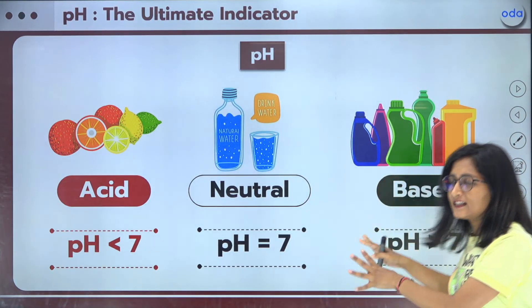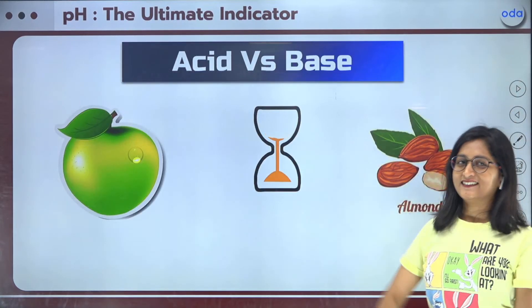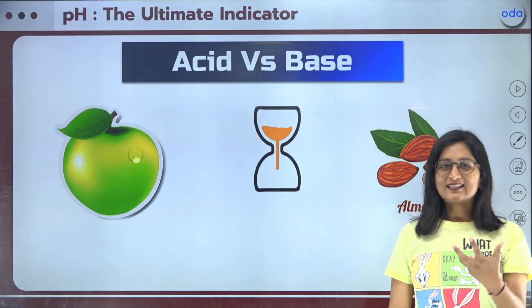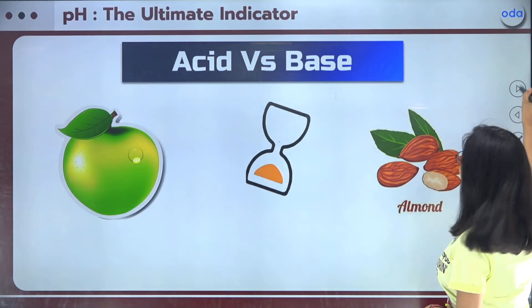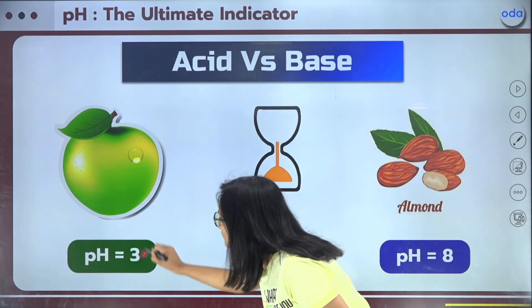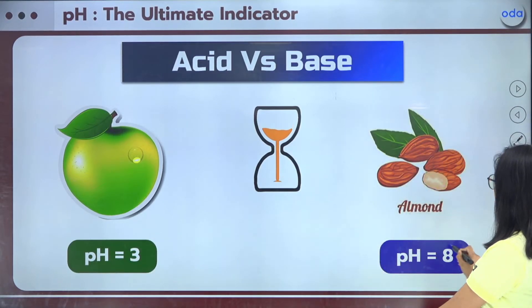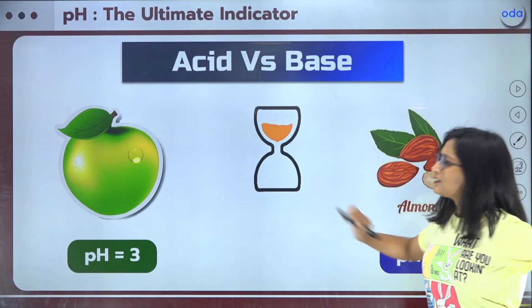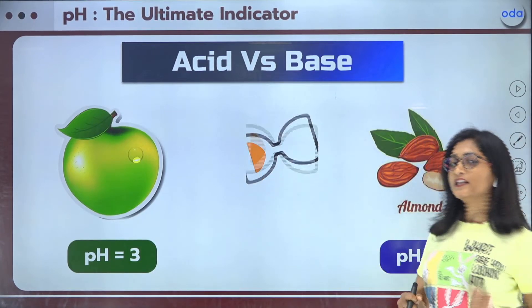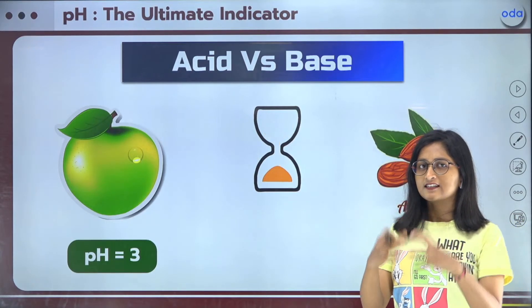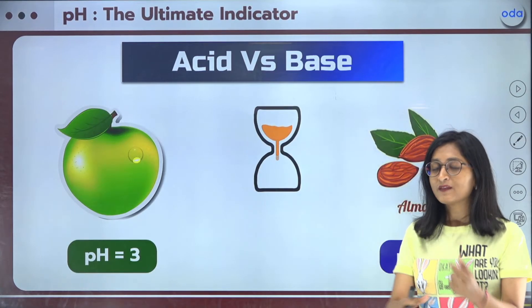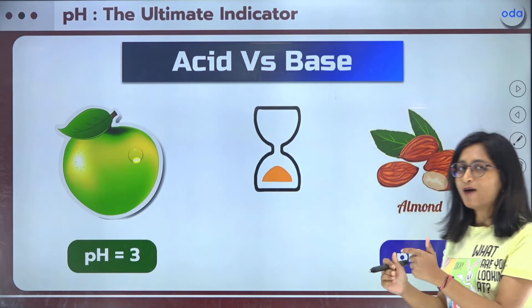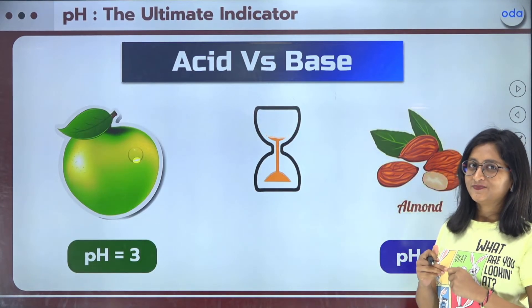Now I'm going to give you the pH value. The green apple has a pH of 3 and the almond has a pH of 8. Which one is acid and which one is base? Your answer should be that the green apple is acidic in nature and the almond is basic in nature. So you got the differences in the value of the pH.